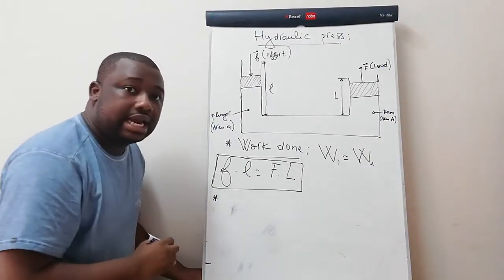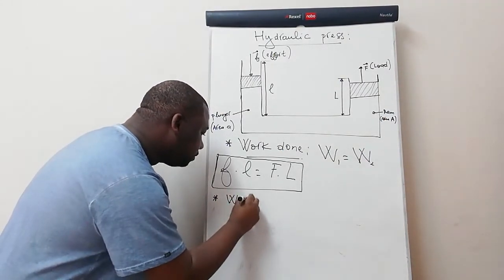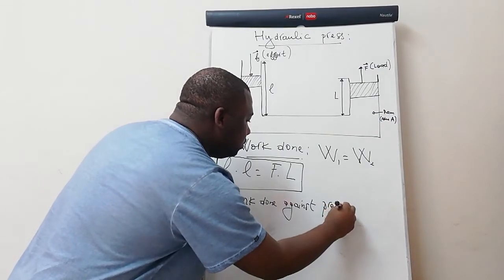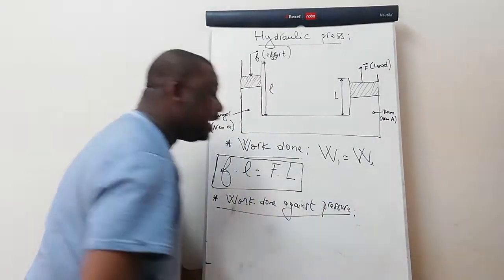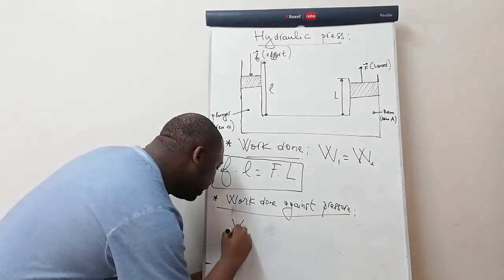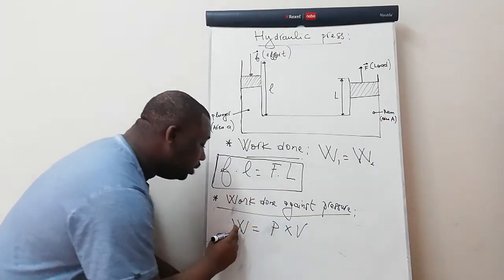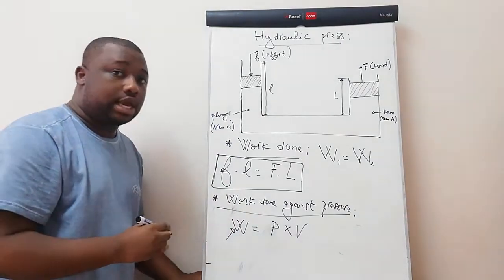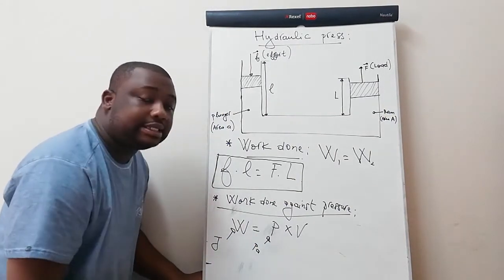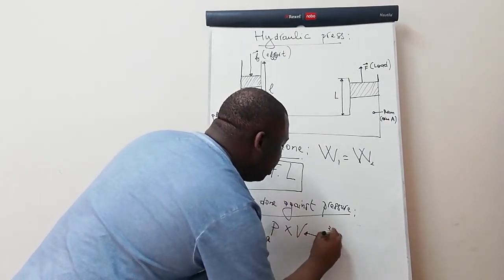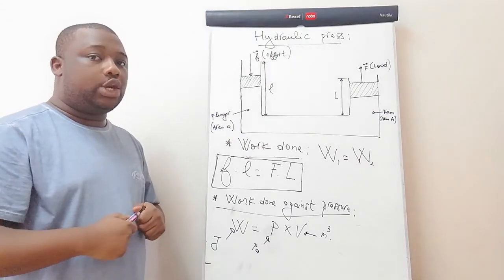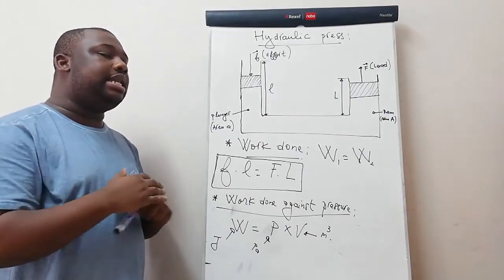There is also the concept of work done against pressure. Work done against pressure equals pressure times volume: W = P × V. Here W is work done in joules, P is pressure in pascals, and V is volume in cubic meters. These are the necessary formulas you need to master for the hydraulic press.